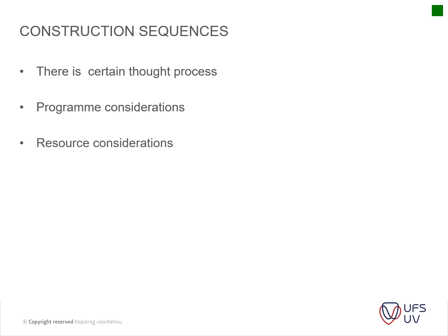Then you have your resource considerations — how much resources do you have available to actually do the work? You always try to get some continuity within your work. The example I always use is the bricklayer: if you sequence your work, you want to try and keep the same face bricklayer on a certain section, and you want to try and finish a section within a day to keep the signature more or less the same, so that you don't have a line where the bricklayer started and stopped, or where a new bricklayer had to come in and finish the job.